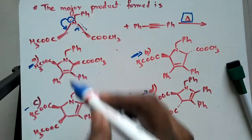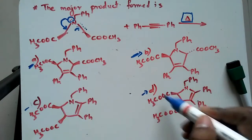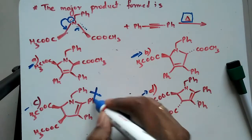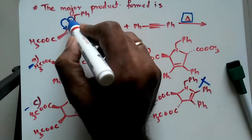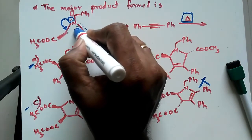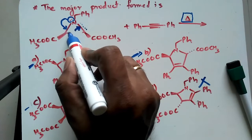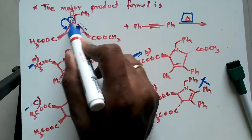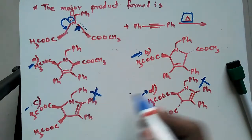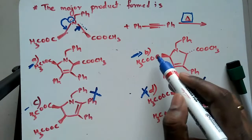The way option C and option D are opening is not the correct way. The lone pair of electrons falls here, this bond breaks and falls here — so that way of opening the ring is incorrect. Option C and option D can be ruled out.